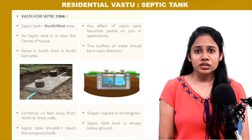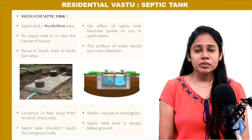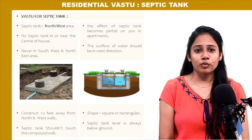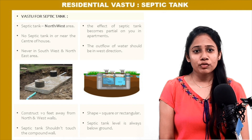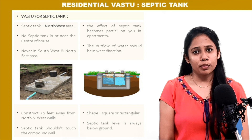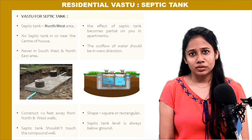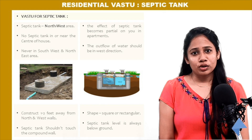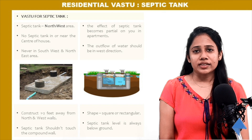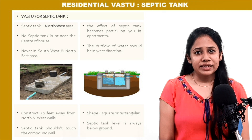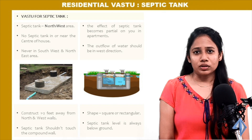Whenever you construct a septic tank, it should always be constructed one to two feet away from the compound walls, especially from the north and west walls. The septic tank should not touch the compound wall. The effect of a septic tank becomes partial if you are residing in an apartment. The outflow of the septic tank water should be in the best direction. The shape of the septic tank should be square or rectangular.